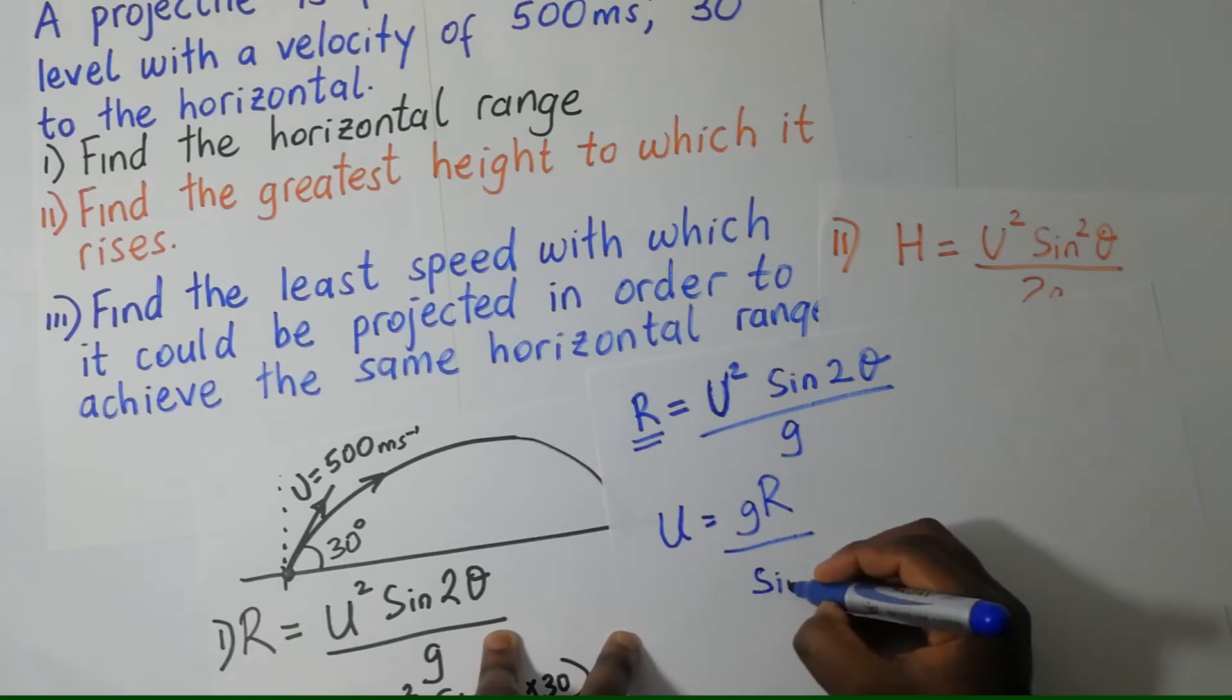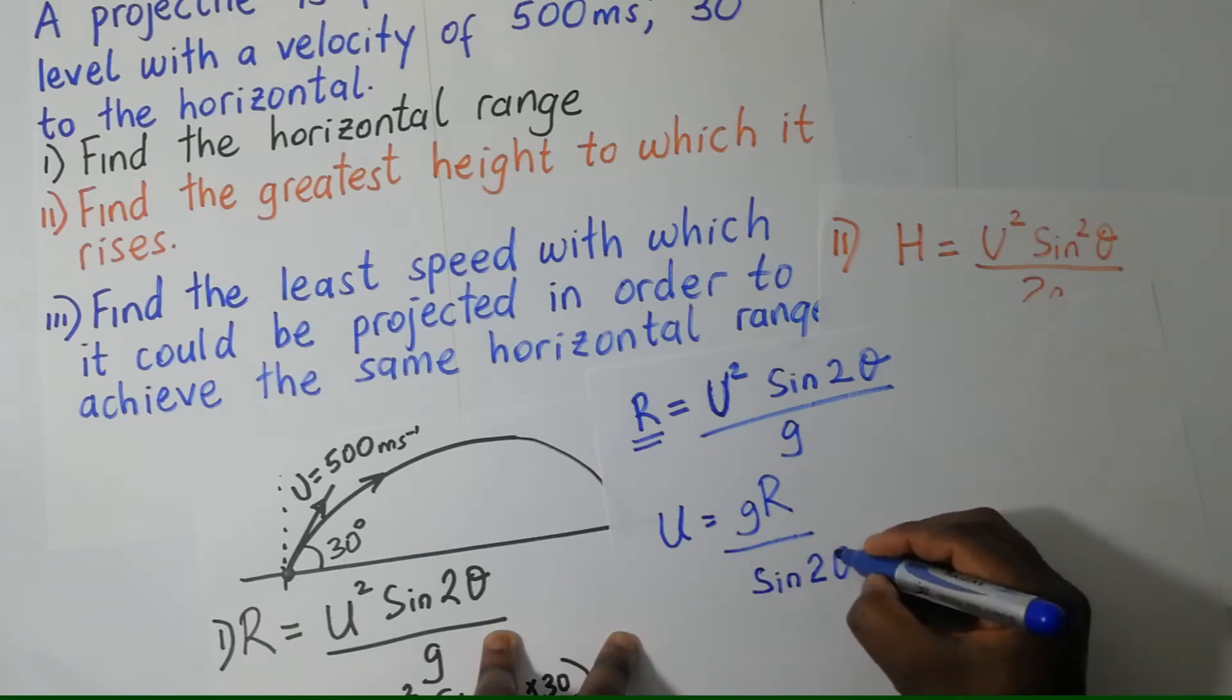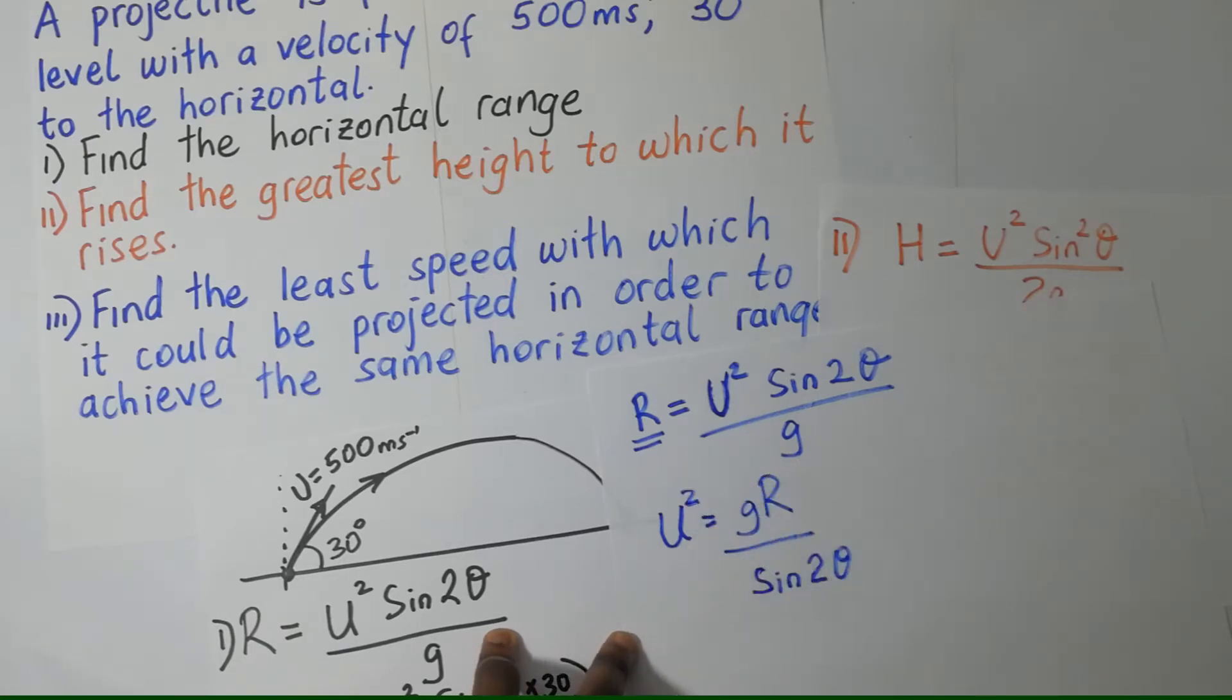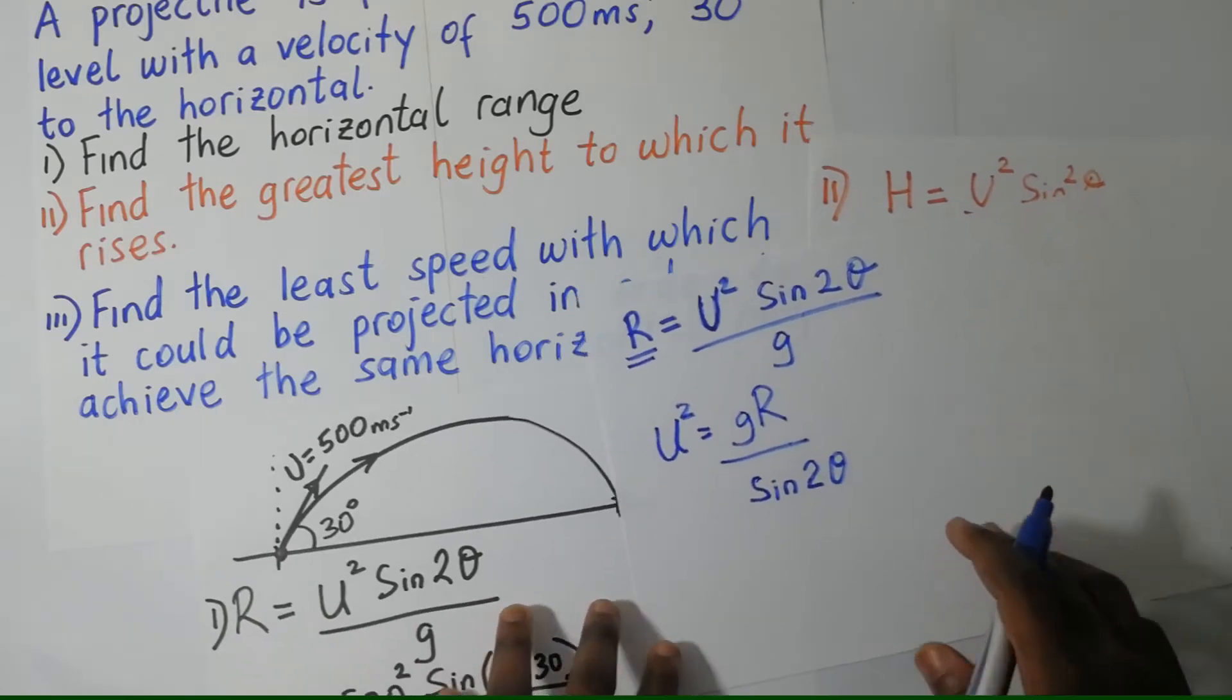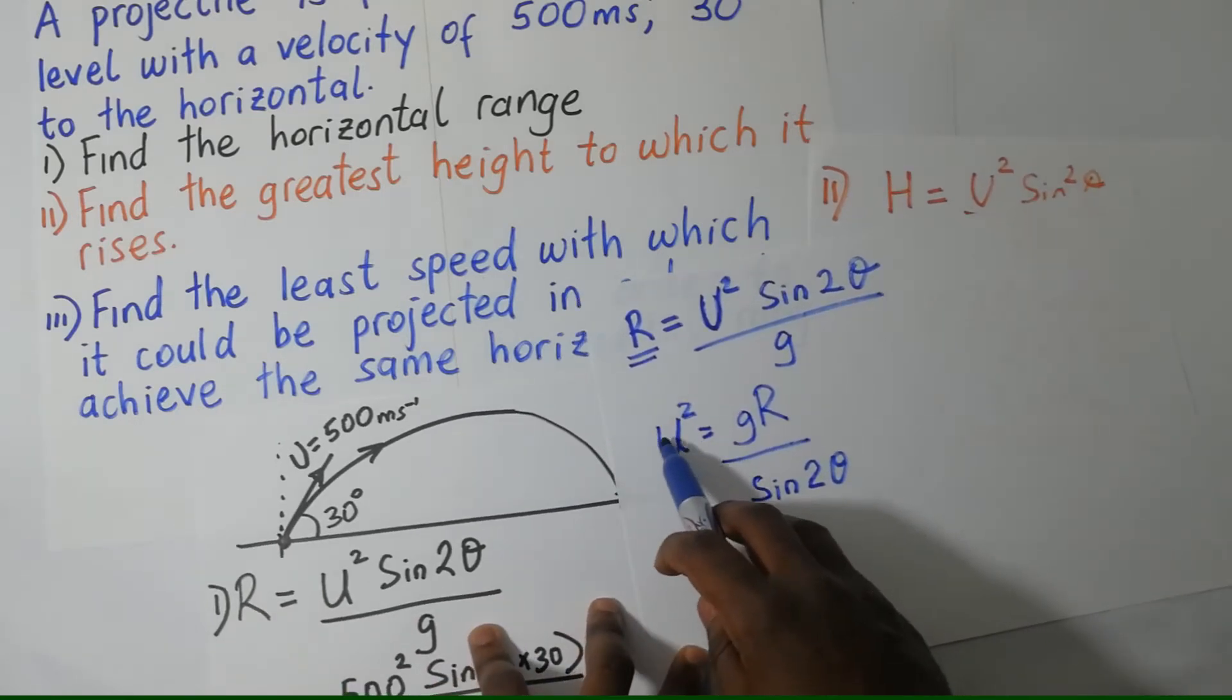So when this is U squared, like that. So we need to find the least value of U.